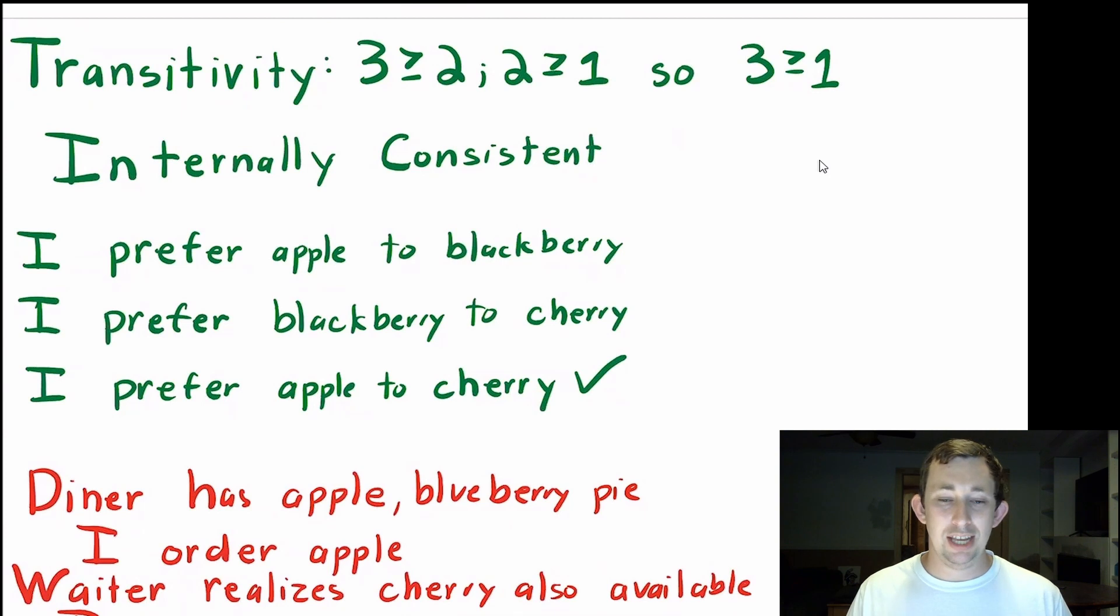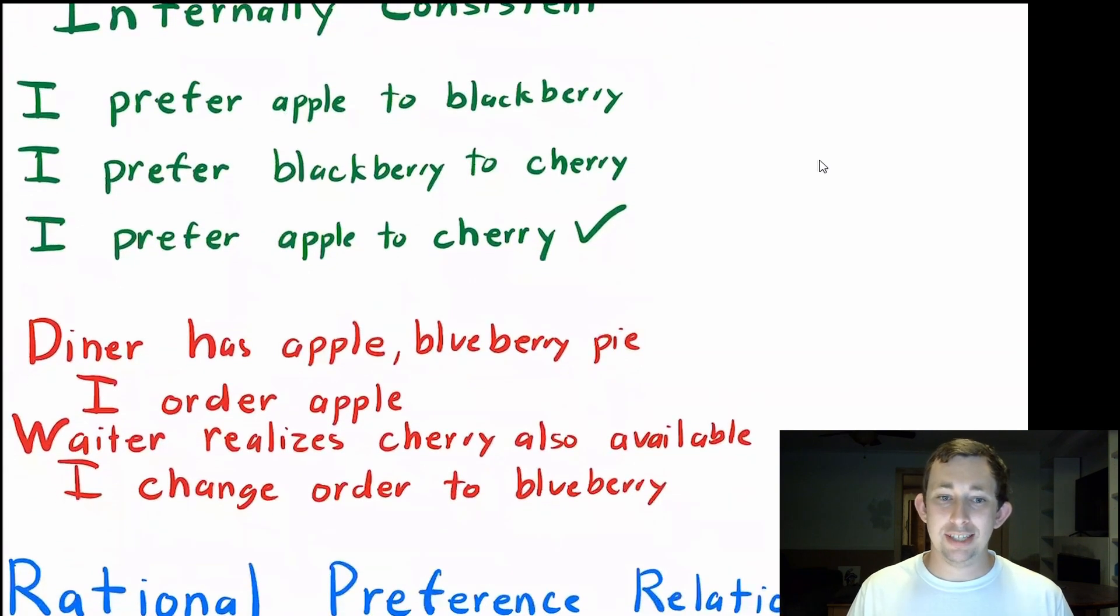What is an example of not being transitive? Well, let's say that I go to a diner, and it's got two types of pie, apple and blueberry, and I say, cool, I'll take the apple. The waiter comes back and says, hey, we have a third option today, we have cherry pie. And I look him dead in the eye, straight faced, and I say, well, in that case, I would like a blueberry pie, please.